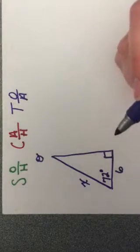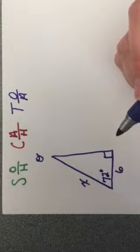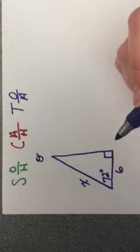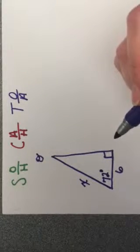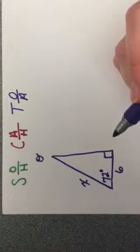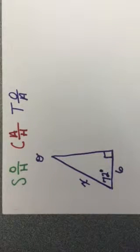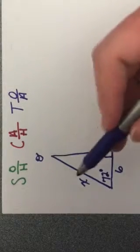Basically, what they're asking us to do is either find the sine of 72 or the cosine of 72 or the tangent of 72 degrees. So we need to pick which trig ratio is going to fit for this situation.